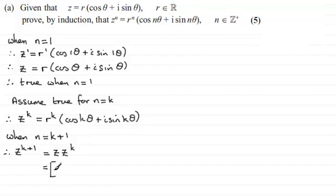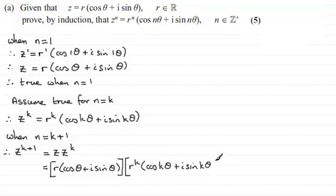Z which is R multiplied by cos theta plus I sine theta. And this is all multiplied with Z to the power k. So if I assumed that Z to the power k was equal to this, let's just put that in, R to the power k multiplied by cos k theta plus I sine of k theta. Now if I expand the brackets, we've got R times R times R to the power k, which is going to be equal to R to the power k plus 1.